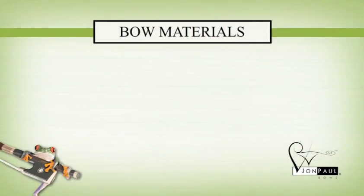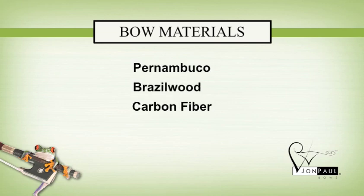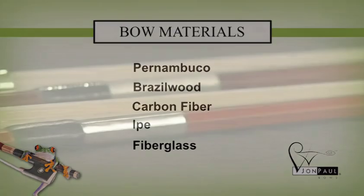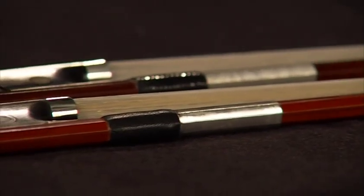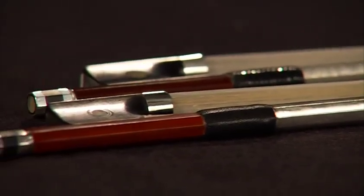Now let's talk about materials. Currently there are five materials from which quality bows are made: Pernambuco, Brazil wood, carbon fiber or composites, Ipe, and fiberglass. Until recently, the first two on the list were the only choices of materials for bows. These were Pernambuco wood, a South American hardwood, and its cousin Brazil wood.